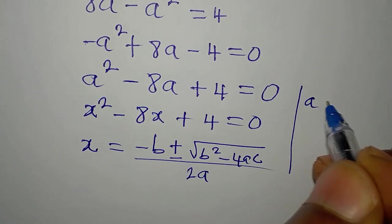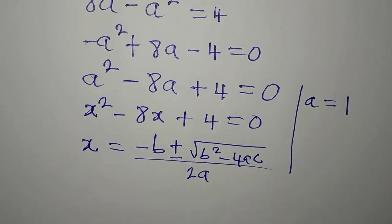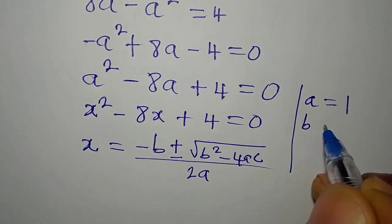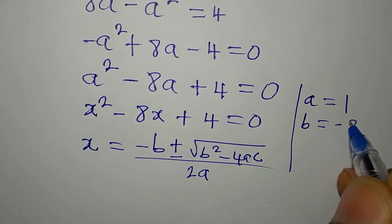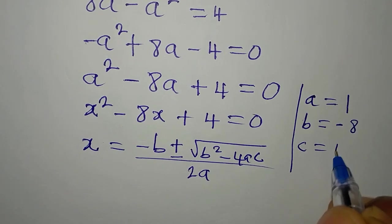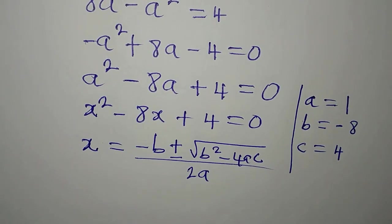We have A to be equal to 1, the coefficient of X squared. Our B to be equal to minus 8, the coefficient of X. And our C to be equal to positive 4.